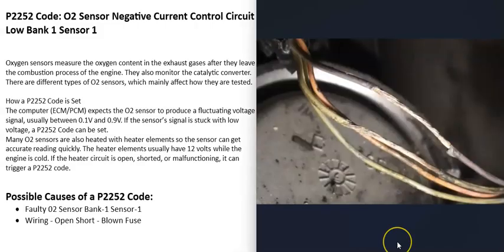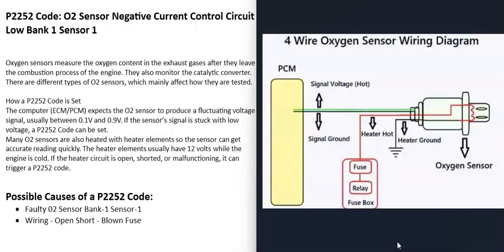The next thing that could cause this is some kind of wiring issue — an open circuit, a short, or a blown fuse. There can be different types of O2 sensors: two-wire, three-wire, or four-wire sensors. Four-wire sensors are fairly common.